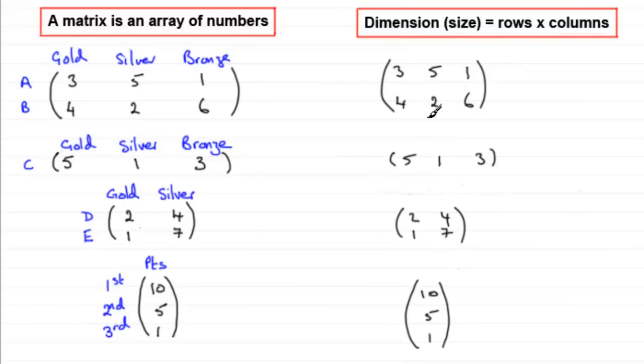So a matrix like this, for instance, what would its dimension be? Well for its dimension, it would be two rows by three columns. So we'd say its dimension was a two by three matrix.